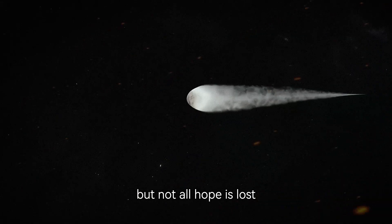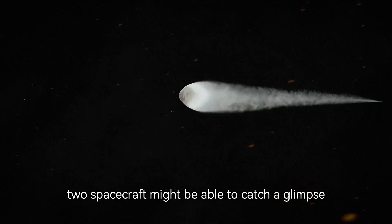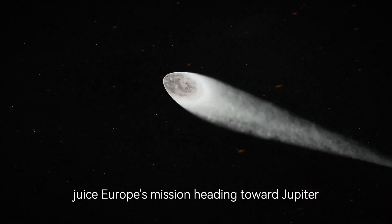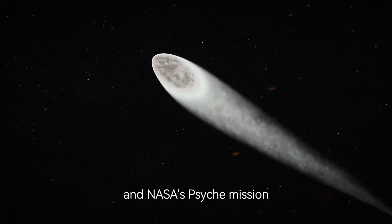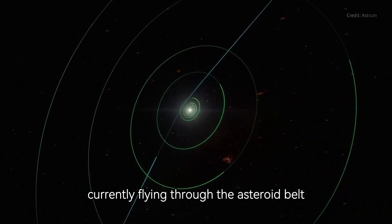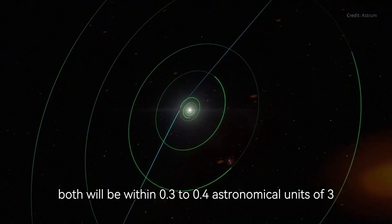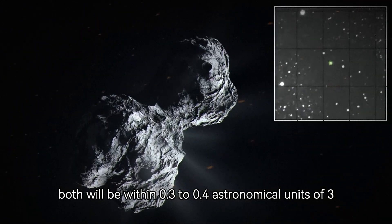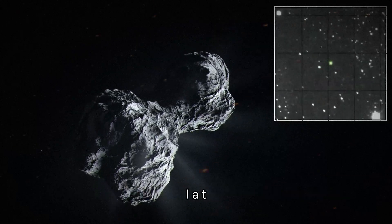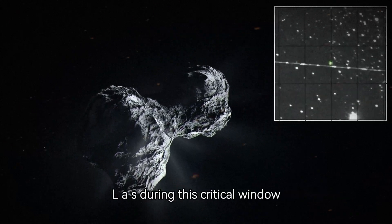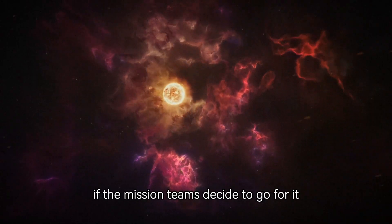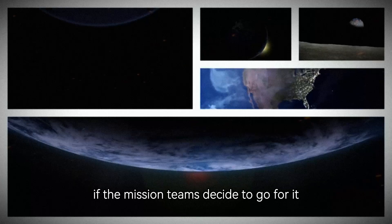But not all hope is lost. Two spacecraft might be able to catch a glimpse. JUICE, Europe's mission heading toward Jupiter, and NASA's Psyche mission currently flying through the asteroid belt. Both will be within 0.3 to 0.4 astronomical units of 3i Atlas during this critical window. That's close enough to potentially observe it directly if the mission teams decide to go for it.